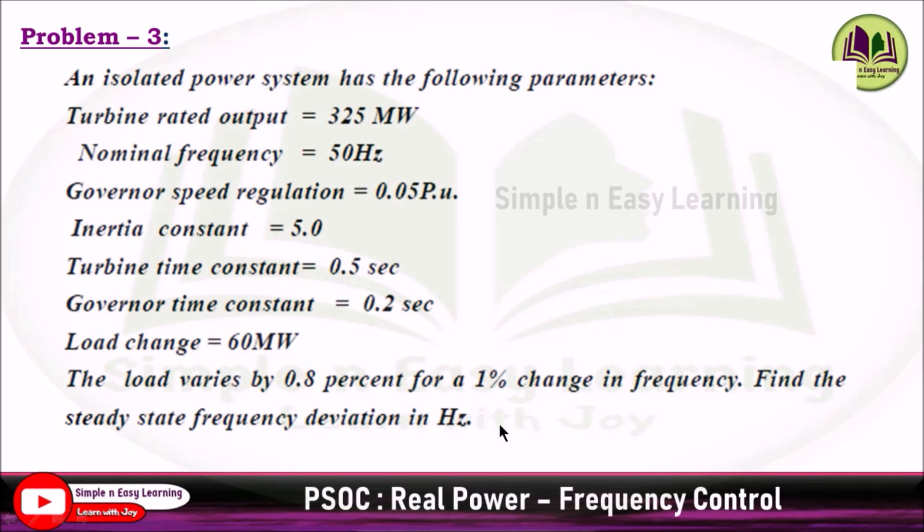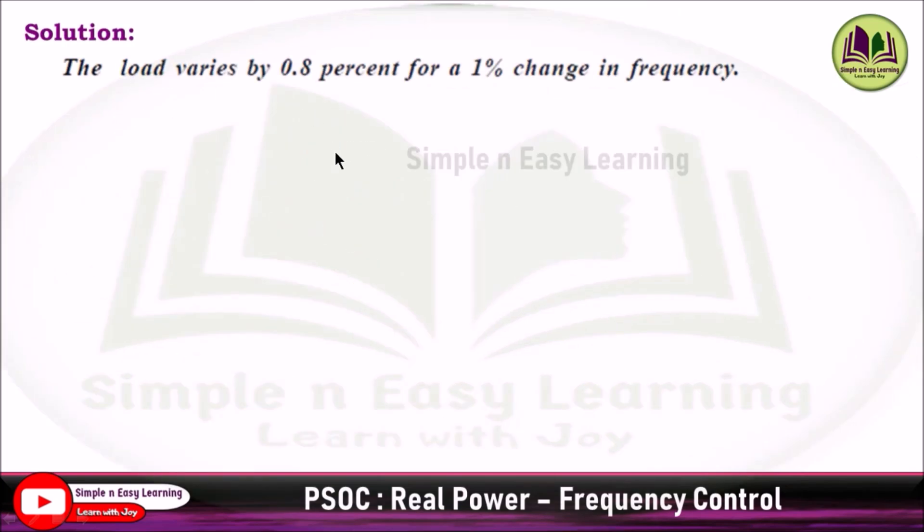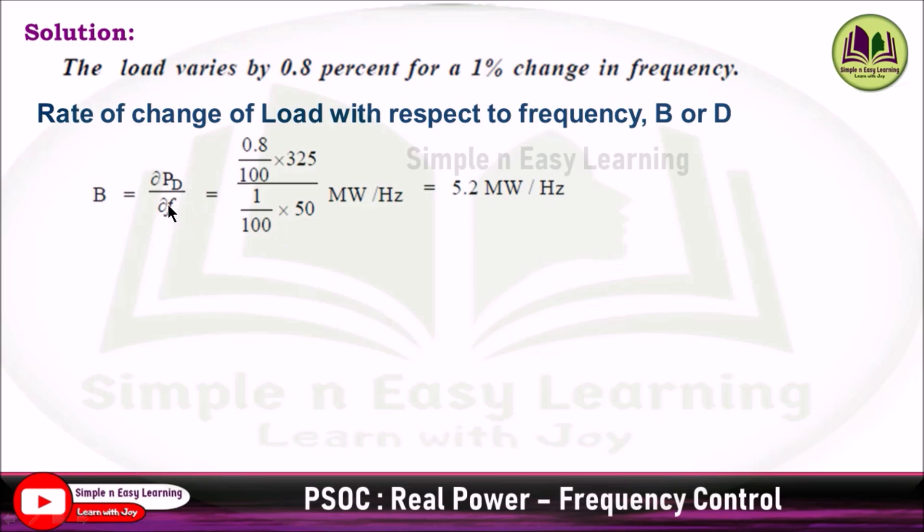Solution: The load varies by 0.8 percent for a 1 percent change in frequency. The rate of change of load with respect to frequency, B or D, equals ΔPd/Δf. So 0.8 divided by 100 times 325 megawatt, divided by 1 by 100 times 50, gives you 5.2 megawatt per hertz. In per unit divided by the base power, 5.2 divided by 325 gives 0.016 per unit megawatt per hertz.